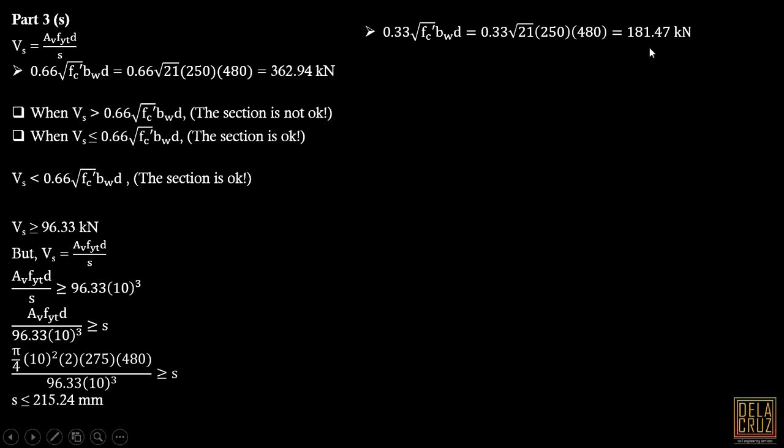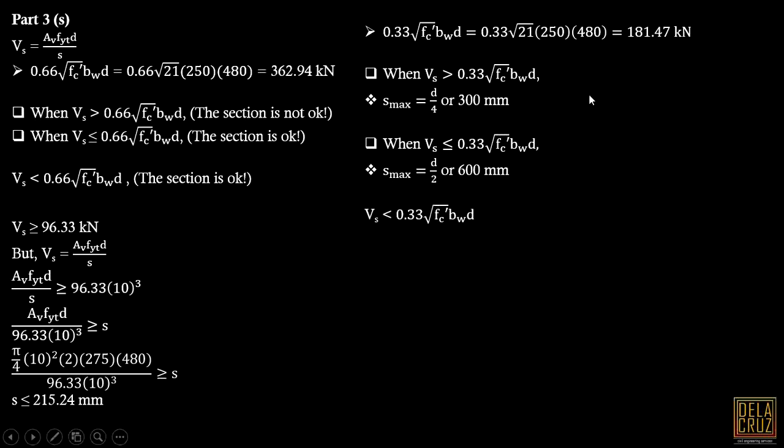Is this our final answer? Not yet. There's another criteria to consider: 0.33 times square root of f'c times bw times d. Check this value first. What is this criteria for? This criteria is for the maximum spacing allowed by the code. When Vs is greater than this value, the maximum spacing given by the code is d over 4 or 300 mm. When Vs is less than or equal to that value, the maximum spacing allowed is d over 2 or 600 mm.